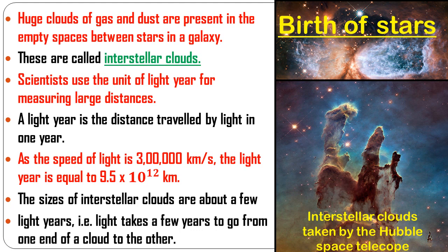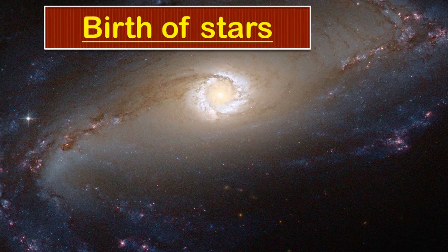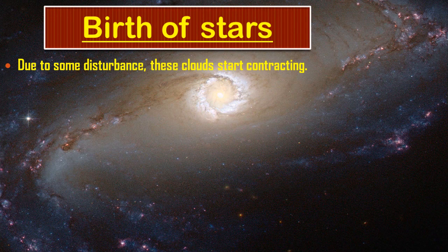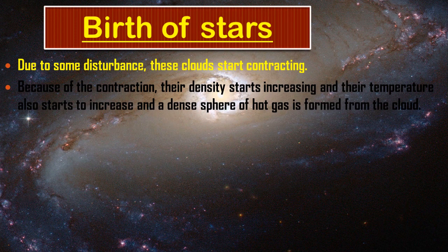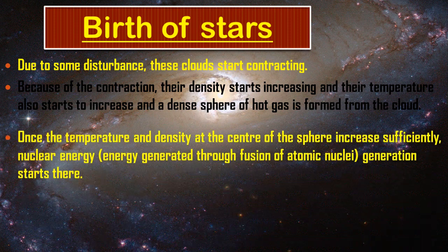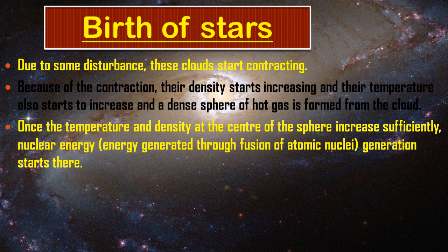From this you can imagine the huge sizes of an interstellar cloud. Due to some disturbance, these interstellar clouds start contracting, and because of the contraction their density starts increasing and their temperature also starts to increase. As density increases, temperature of the clouds also increases, and a dense sphere of hot gas is formed from the interstellar cloud.